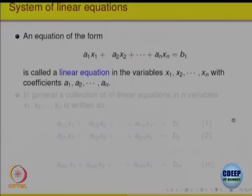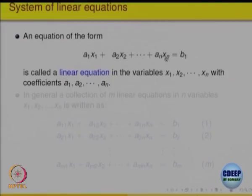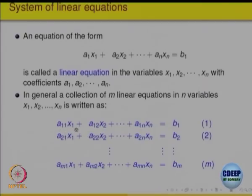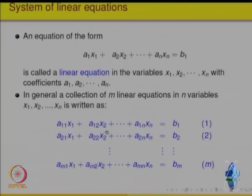We recall that an equation of the type a1·x1 + a2·x2 + ... + an·xn = b is called a linear equation because the variables x1, x2, ..., xn all have power 1. This linear equation has coefficients a1, a2, ..., an. In general, we may have a collection of m linear equations in n variables, written as a11·x1 + a12·x2 + ... The first subscript in the coefficients indicates the equation. The mth equation has coefficients am1, am2, and so on.